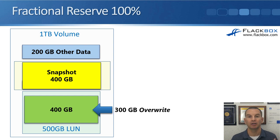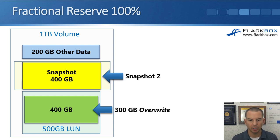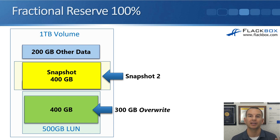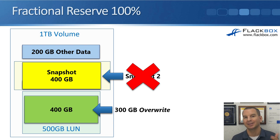We could then write another 300GB to the LUN — that works fine too, because the snapshot is read-only and stays the same. But if we then try to take a second snapshot, it would need to reserve 300GB of space, which isn't available, so that snapshot cannot be taken. Enabling fractional reserve ensures you can always write to the active file system of the LUN, but it doesn't guarantee you can always take another snapshot.